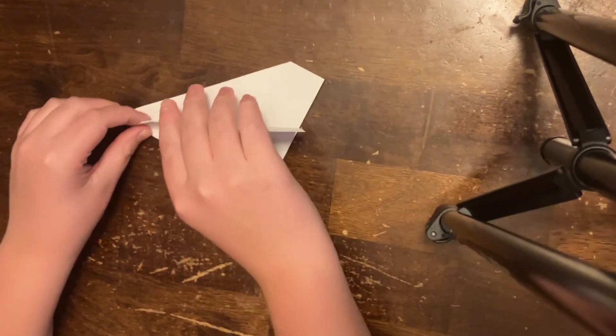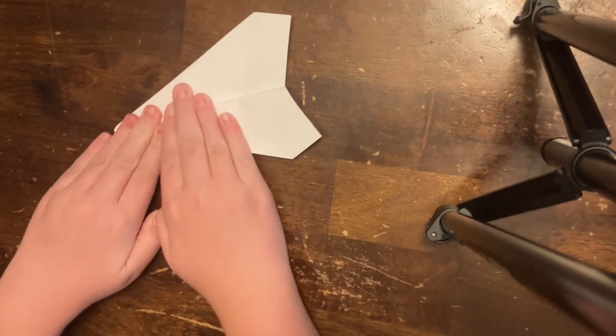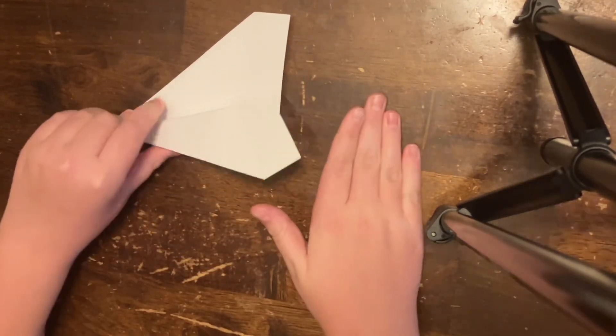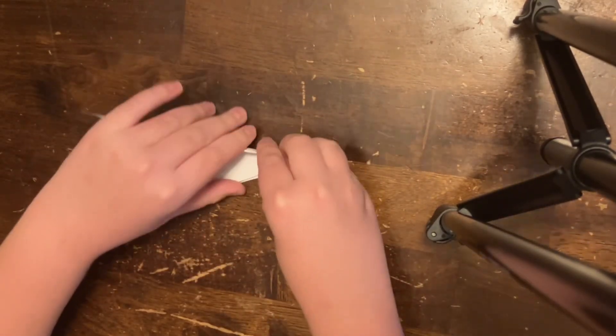And then after you do that, you just fold it in half so it makes the wings look like this. And then do it on the other side.